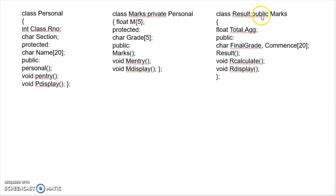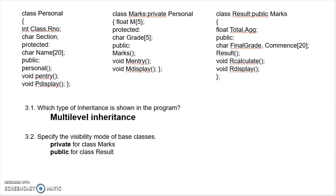Based on this program, several questions are answered one by one. First question: which type of inheritance is shown? Marks inherits from Personal, and Result inherits from Marks — so in two levels, we call this multilevel inheritance. The visibility modes of the base classes are: Marks is in private mode and Result is in public mode.